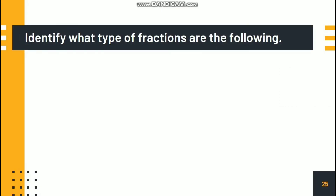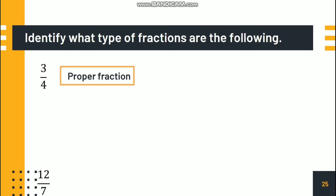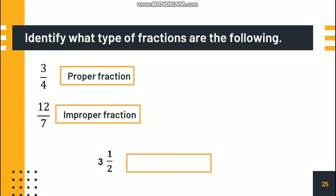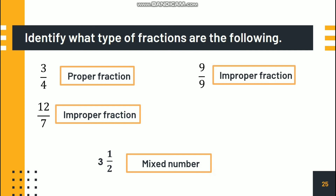Identify what type of fractions the following are. Three-fourths is a proper fraction. Twelve-sevenths is an improper fraction because the numerator is greater than the denominator. What about three and one-half? It's a mixed number since we have a whole number and a fractional part. What about nine-ninths? It's an improper fraction — if the numerator is greater than or equal to the denominator, that is an improper fraction. What about five-tenths? It's a proper fraction.